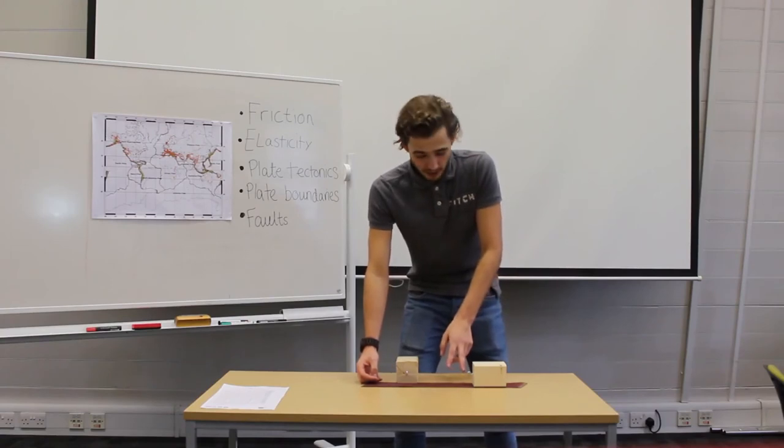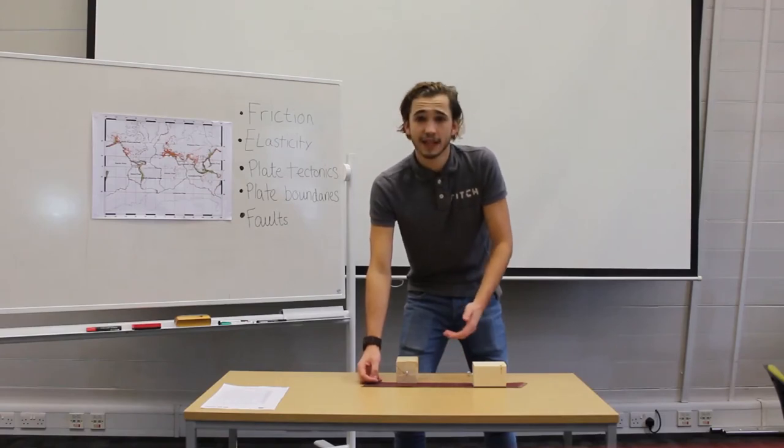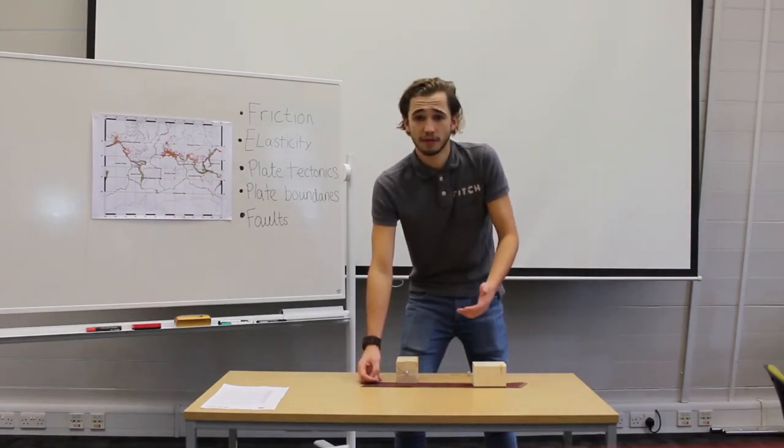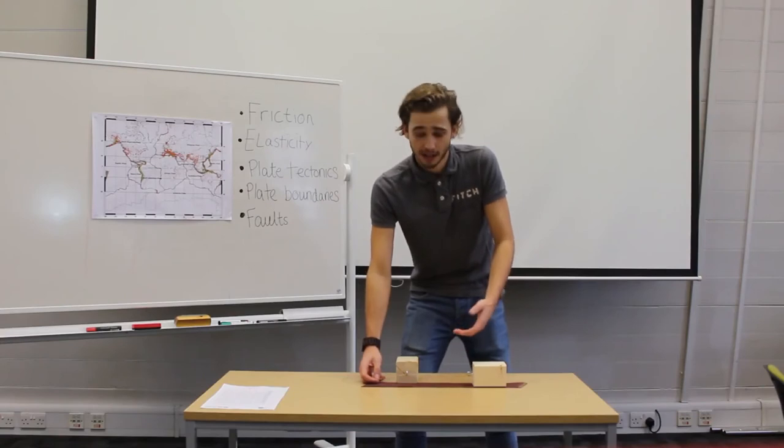As movement continues to deform the elastic band, stretching it, elastic energy is stored. Similarly, in a fault system, the material around the fault deforms as movement occurs, storing elastic energy.